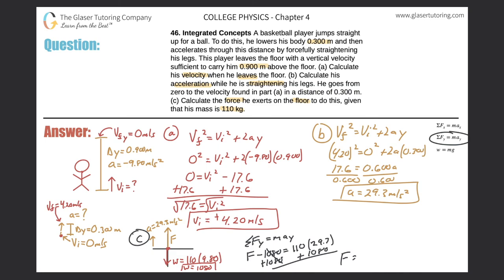So F = 110 × 29.3 + 1080, which gives us approximately 4300 Newtons. That's the force the ground exerts on Hakim — and by Newton's third law, equal and opposite to the force he exerts on the floor. So the answer to Part C is 4300 Newtons. Thanks for tuning in — this is a great problem integrating multiple concepts. Please subscribe and I'll see you in the next video.